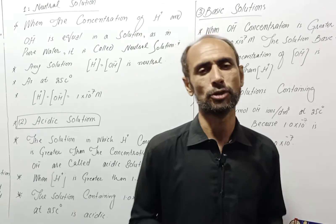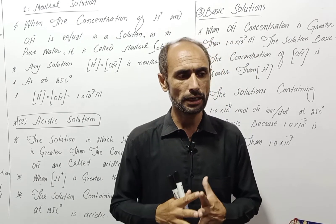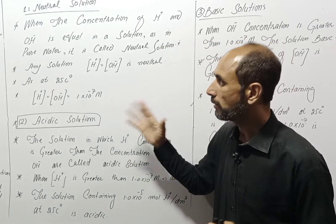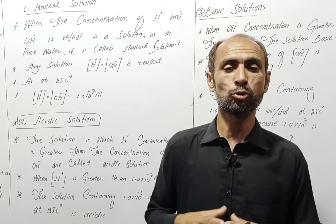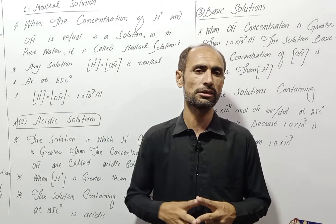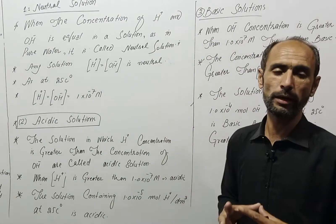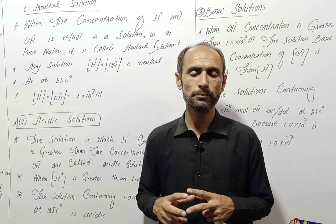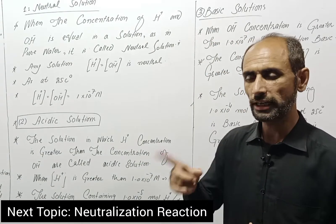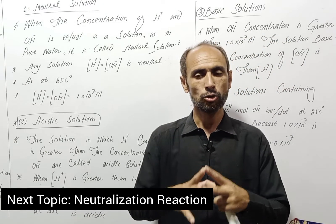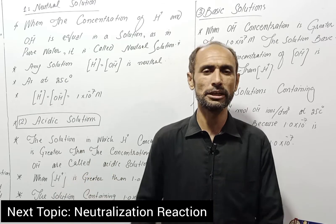So there are three types of solutions: Neutral Solution, Acidic Solution, and Basic Solution. If the hydrogen ion concentration and hydroxyl ion concentration are equal, it is a neutral solution. If hydrogen ion concentration is greater, it is acidic. For example, if hydrogen ion concentration is 1.0 × 10⁻⁴ and the second solution is 1.0 × 10⁻⁷, the more acidic solution is the one with higher hydrogen ion concentration.